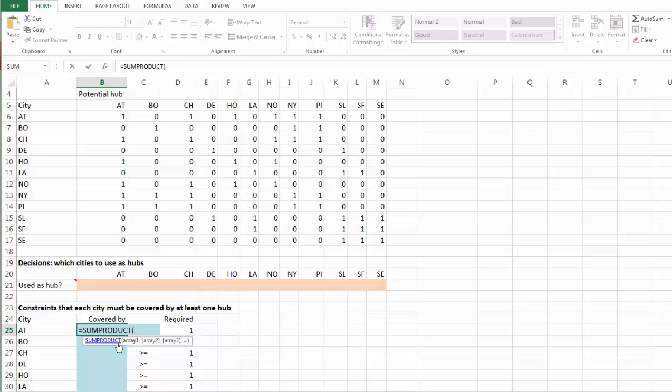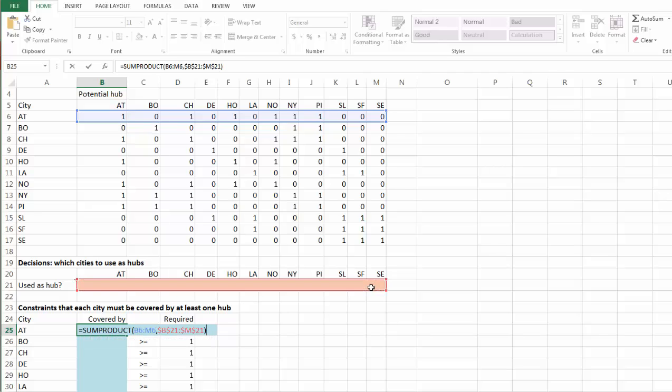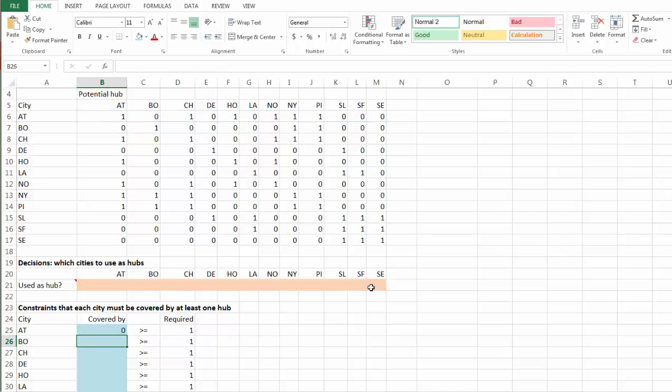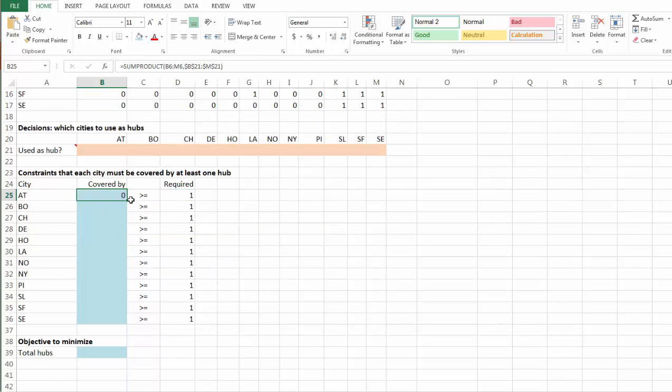SUMPRODUCT of row six from B6 to M6 and our binary decision variables. Let's use absolute address. And this SUMPRODUCT function gives us what we saw earlier on our PowerPoint slide. And this is how many hubs can cover Atlanta. And this number must be greater than or equal to one. Once we have done that, we can easily copy and paste the formula for the remaining 11 cities.